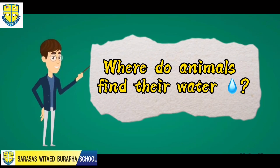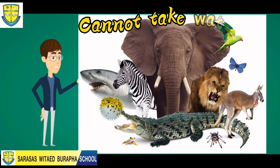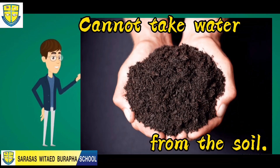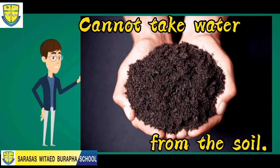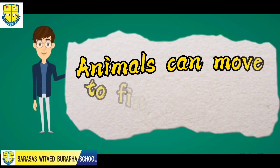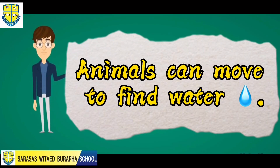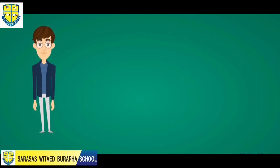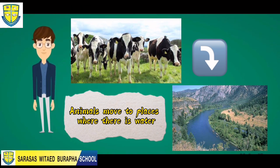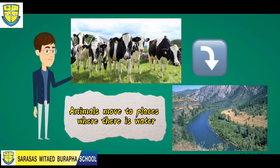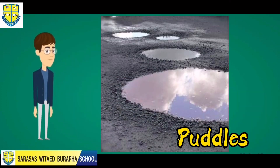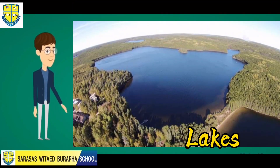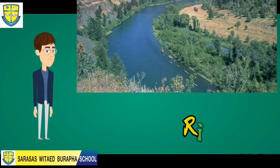Next, where do animals find their water? Animals cannot take water from the soil, but animals can move to find water. Animals move to places where there is water, like puddles, lakes, and rivers.